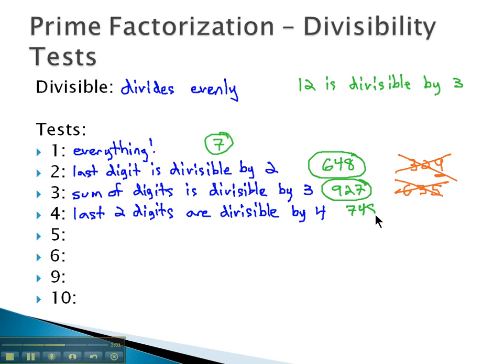For example, if I had the number 748, the last 2 digits are 48, and we can see 4 goes into there 12 times. 4 goes into 4 once, and 8 twice. Because it goes in there evenly, that means the entire number will be divisible by 4.